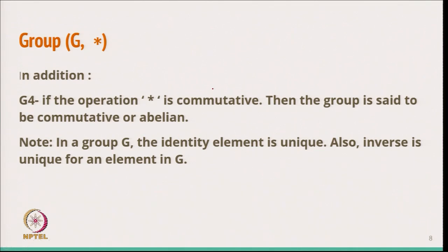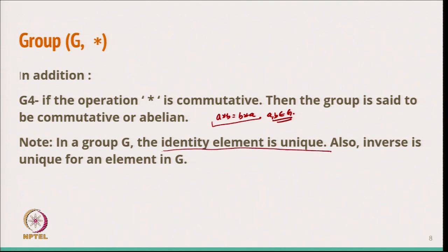In addition, if the operation star is commutative — that is, A star B equals B star A for all A, B in G — then the group is said to be a commutative or abelian group. Note that the identity element E is always unique in a group, and the inverse is also unique for any element in G.